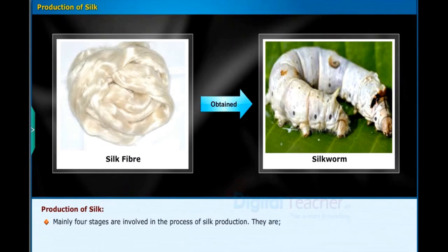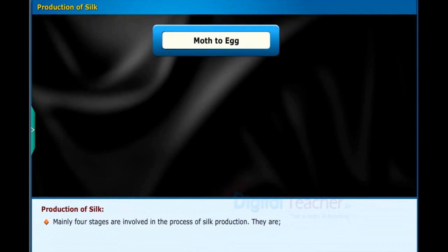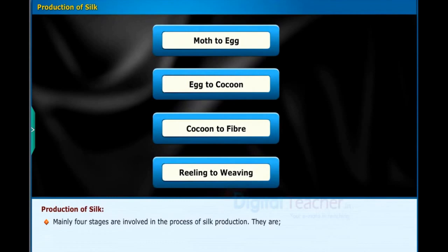Mainly four stages are involved in the process of silk production. They are: moth to egg, egg to cocoon, cocoon to fiber, and reeling to weaving.